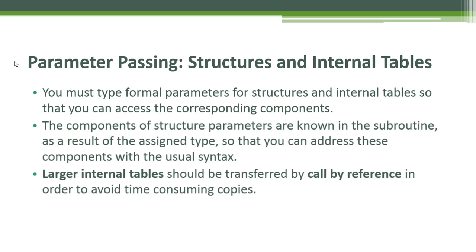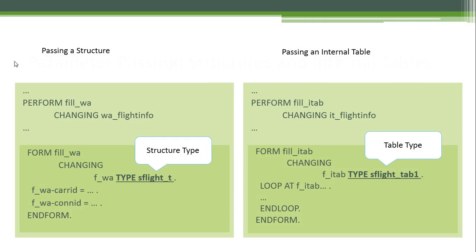Larger internal tables should be transferred by call by reference to avoid time-consuming copies. In this graphic, on the left we have passing the structure as a parameter — you write your PERFORM, then in this case the working area, using CHANGING with the working area structure variable. This is a pass by reference. When you define your FORM or subroutine, you define CHANGING and specify the formal parameter with a type, which must be a structure type matching your actual parameter.